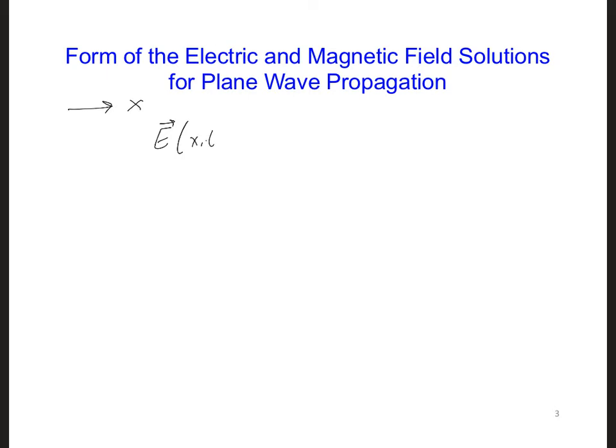The electric field is a vector, a function of space and time, pointing in the z direction, has some amplitude, E naught cosine omega t minus k x. Notice the maximum amplitude of the sinusoidal electric field in free space is always E naught. Omega here is the wave angular frequency, 2 pi f, and k here is the wave number.